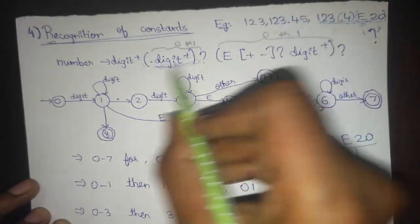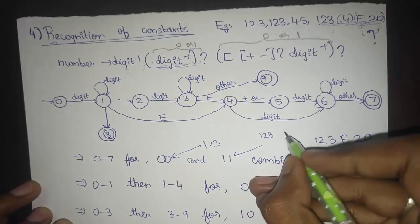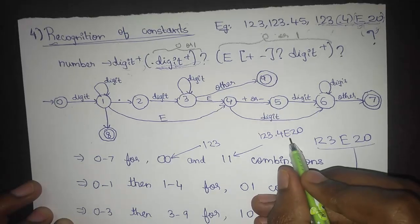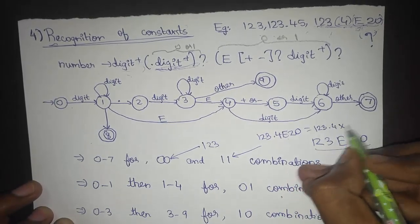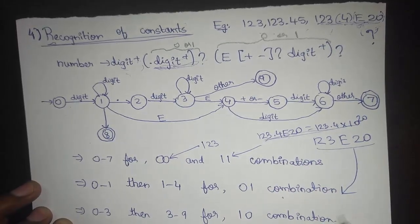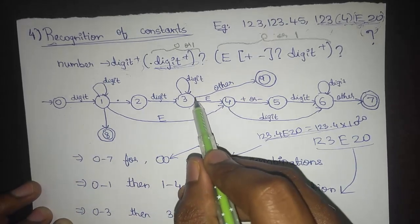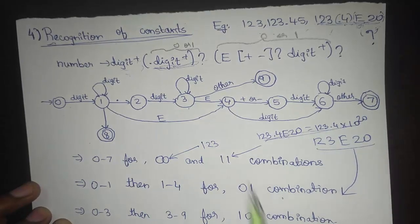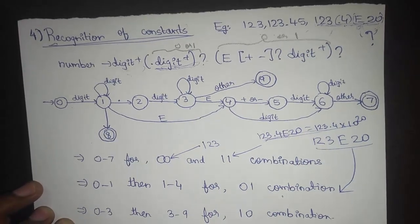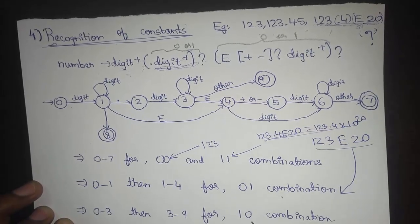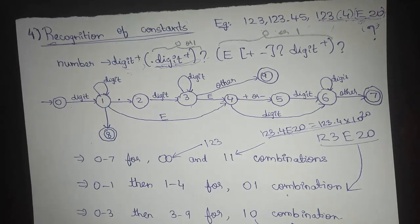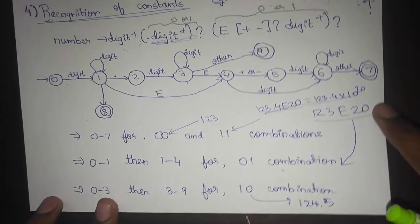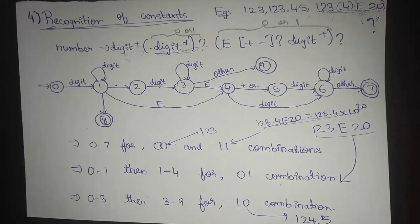For the one-one combination, an example is 123.4e20, which means 123.4 into 10 to the power of 20. For the one-zero combination, we go from state zero to state three then to state nine — meaning we have a decimal point but no exponent, such as 124.5. So a token can be a constant, variable, identifier, or keyword, and we can express all of these in the form of state transition diagrams — that is known as recognition of tokens. Thanks for watching; if you have any doubts please mention them in the comment section.